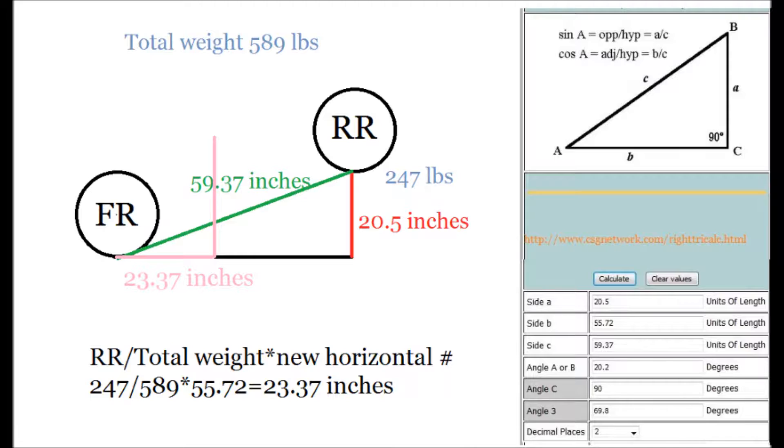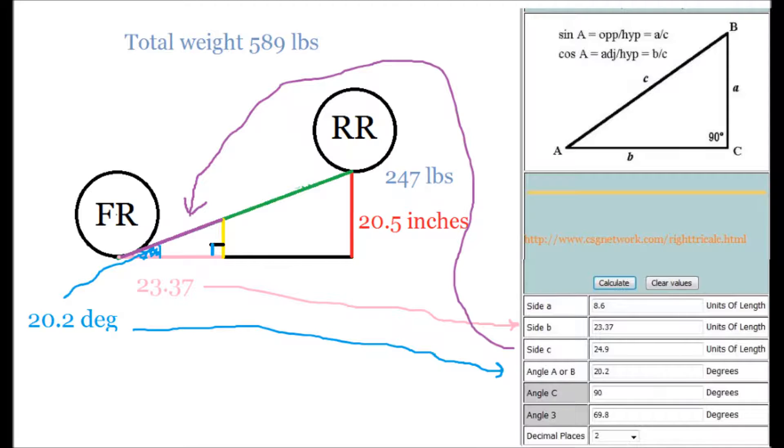Next we need to draw a line at 90 degrees to the black line. It's going to be pointing towards center mass of the bike. It's time to use a calculator again. We need to find the purple line so we're going to put angle A as 20.2 degrees since we already knew that, and we'll put side B as 23.37 inches since we already knew that as well. Click calculate and it'll give you the answer for side C is what we were looking for which is 24.9 inches. It also gave us a side A which is the yellow line but we really we're not going to use it.